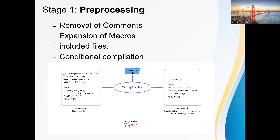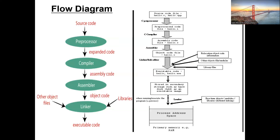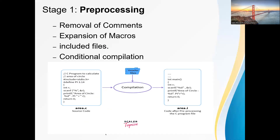The first one is the pre-processing stage. In the pre-processed stage, a programmer develops one .c file. That .c file in high-level programming language is given to the pre-processed stage, which generates a pure source file. The pure source file is the result of: removal of comments, expansion of macros, inclusion of files, and conditional compilation. After the pre-processing stage, we get pure source files with extension .i format or .aa format.